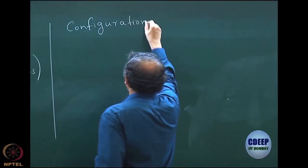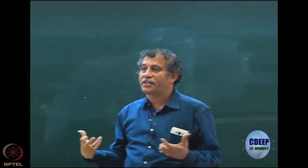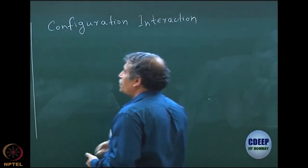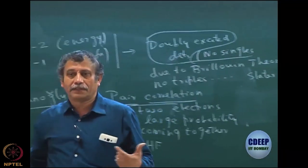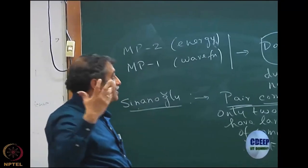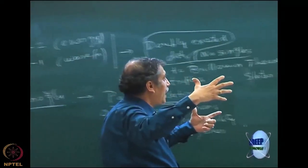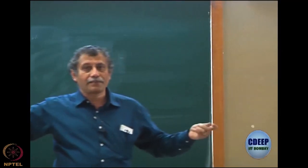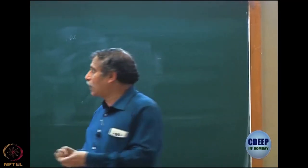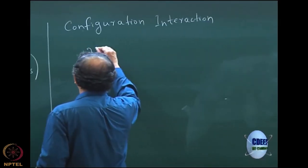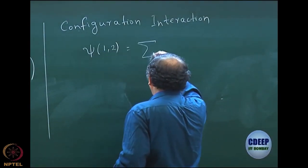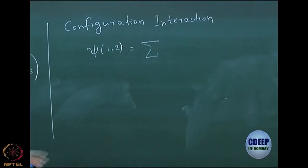We will now start on our next topic and relate perturbation theory to configuration interaction. Perturbation theory and configuration interaction are the two major electron correlation theories to start with. It is the interaction of the configurations which leads to improvement of the Hartree-Fock. As already discussed, if I have m virtual orbitals I can have m-choose-n determinants, and the full wave function is a linear combination of all the m-choose-n determinants.